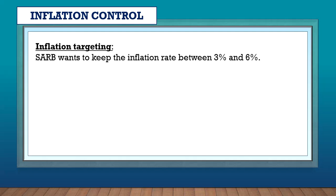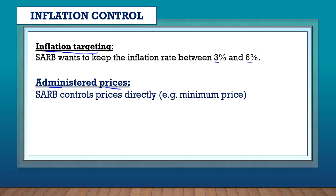Inflation control is how the government tries to control inflation. The South African Reserve Bank tries to keep the inflation rate between 3% and 6% — this is called inflation targeting. The Reserve Bank also administers prices, setting a minimum price so that no one can charge above it. This is a more direct method. So there are two ways: inflation targeting and administering prices.